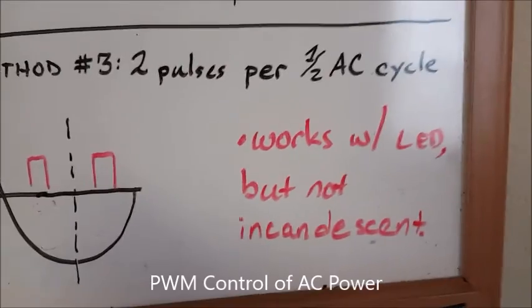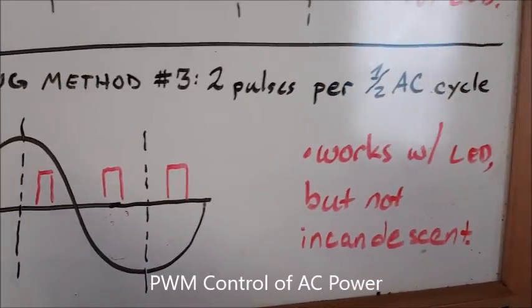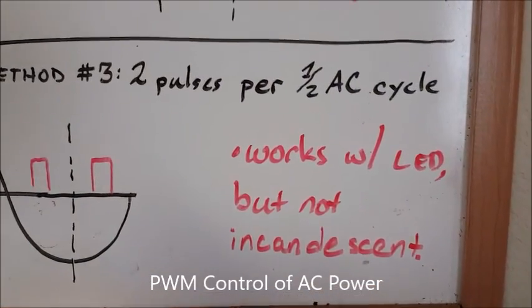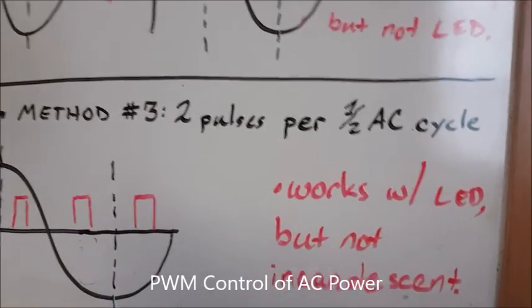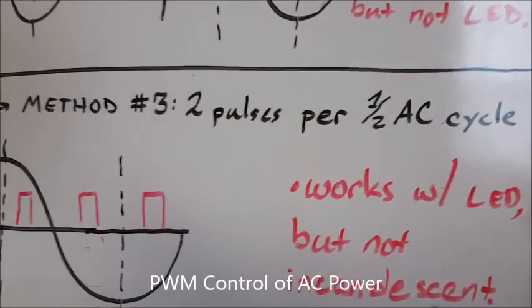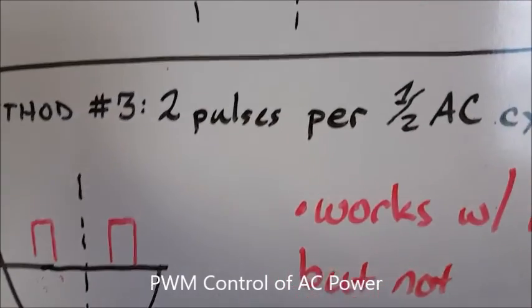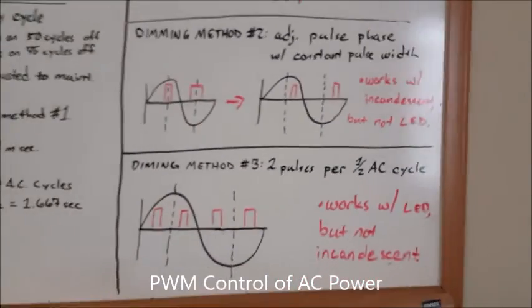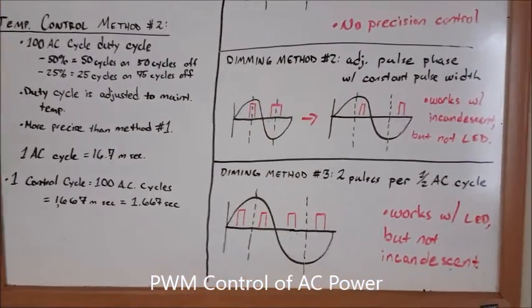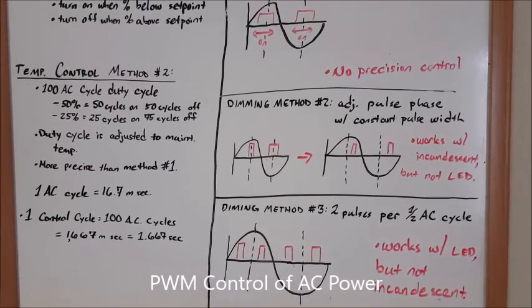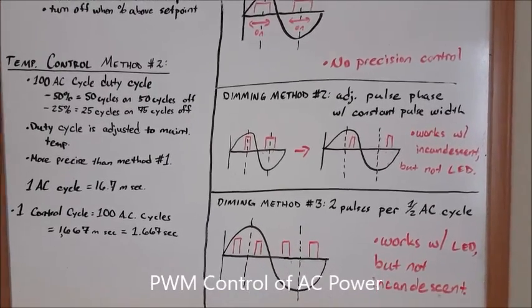That gave me really good precision control with an LED bulb, but on the incandescent this did not work at all. So I have the microcontroller programmed in two modes: one for the incandescent bulb and one for the LED bulb. Now we'll be able to see how each of those works on the two different bulbs.